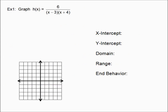Let's look at example number one. Here's h(x). The first thing I'd like to find are my asymptotes. For the vertical asymptote, the denominator is already factored, so there are going to be two values that make the denominator zero — two vertical asymptotes. One is going to be x equals three, and the other is x equals negative four.